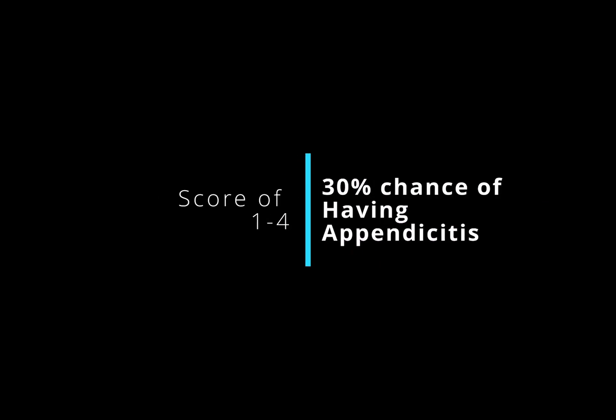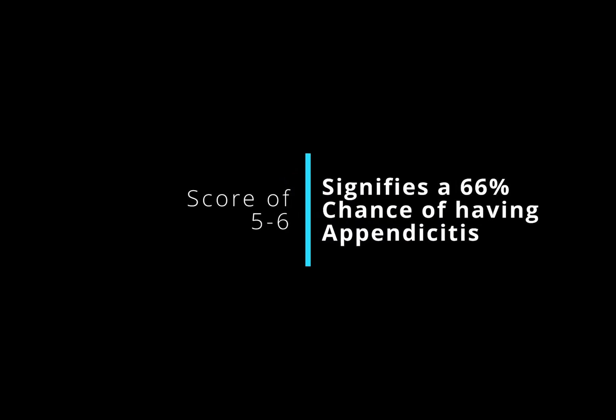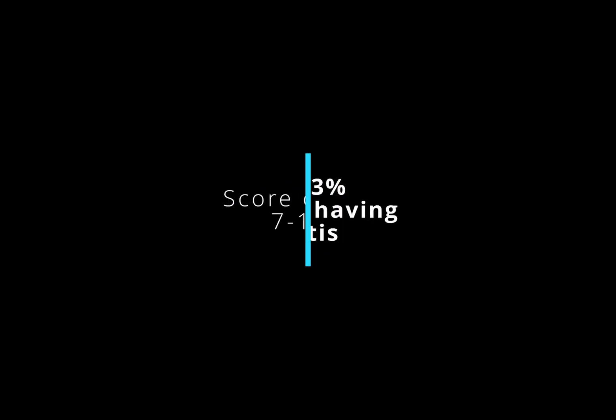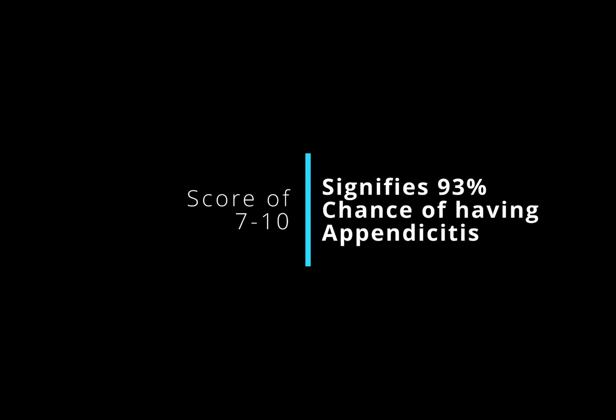A score of 1 to 4 signifies a 30% chance of having appendicitis. A score of 5 to 6 signifies a 66% chance of having appendicitis. And a score of 7 to 10 signifies 93% chance of having appendicitis.